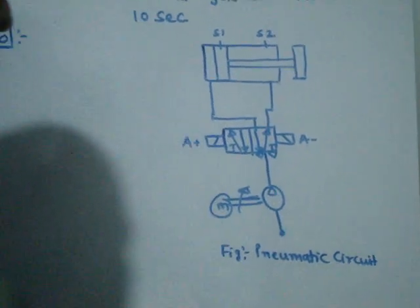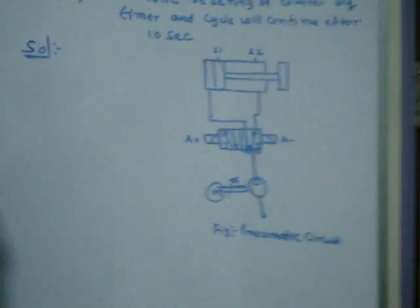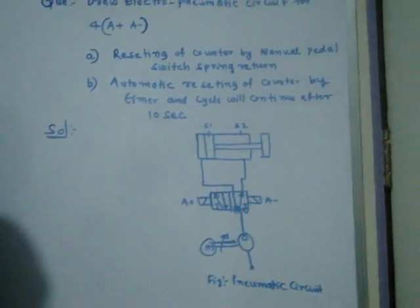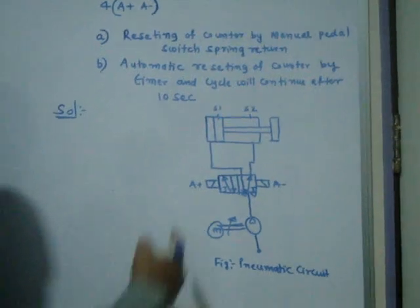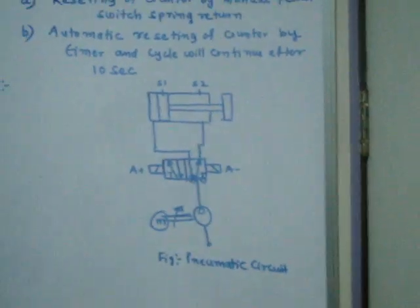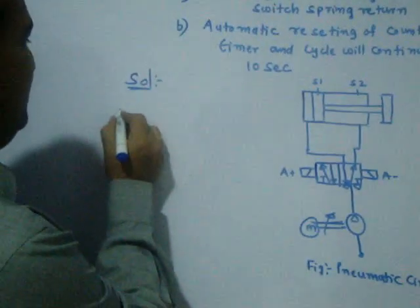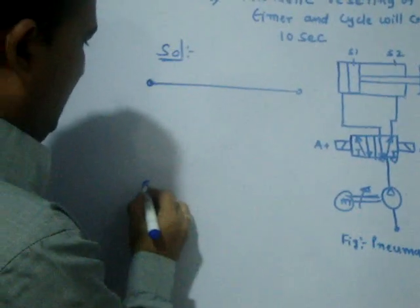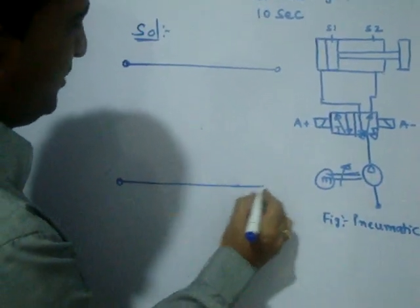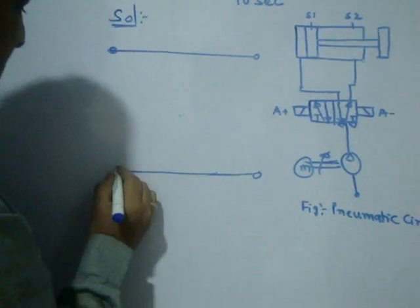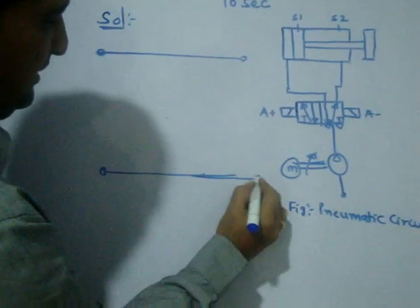How to interface the electric to the pneumatic circuit — by using relay, or by using solenoid valve. These two are the outputs and these two, S1 and S2, are the inputs. I will start the electric logic.